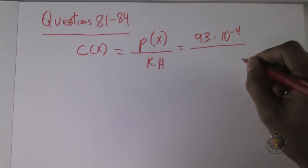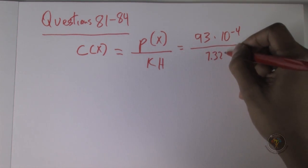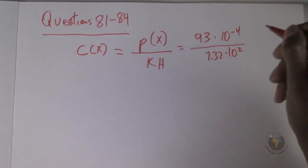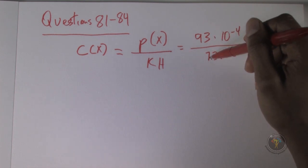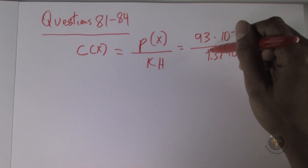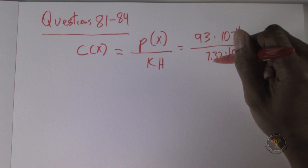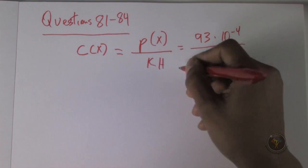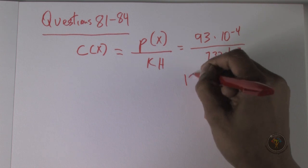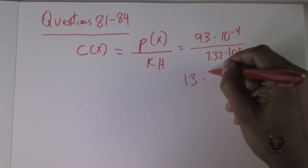I'm looking for the KH for argon. The KH for argon is 732, so I will write that as 7.32 times 10 to the power of 2. Now I can just look at this and say, how many times does 7 fit into 93? It almost fits in there 13 times.